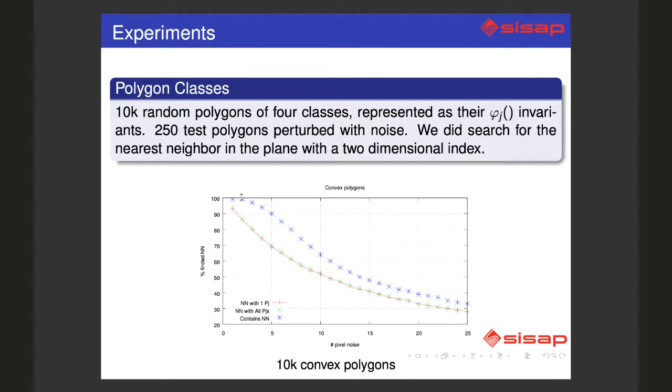If we apply this heuristic, we can retrieve convex polygons with up to two or three pixels of noise. More noise is not good because we will retrieve only 30 percent or something like that of the queries.